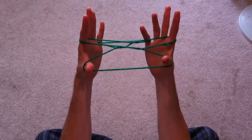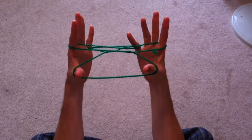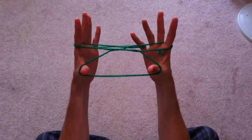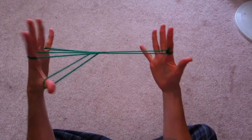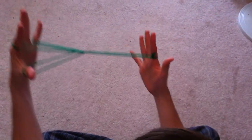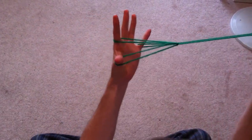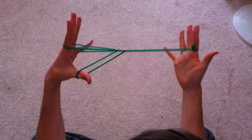On your right hand, let go of your thumb and your pinky, keeping your index finger taut. And there you have your Witch's Broom, or your Fishing Spear, or a Tent.